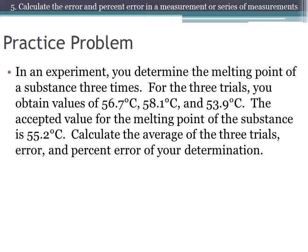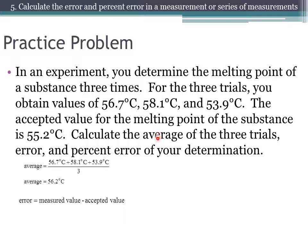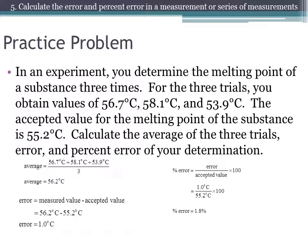Here is a practice problem. Try to do the problem first, then check your answers. The first thing we are going to do is calculate the average of our data — adding the data and dividing by the number of data points — giving us an average of 56.2 degrees Celsius. Now we find the error: 56.2 degrees Celsius minus the accepted value gives us an error of 1.0 degrees Celsius, positive because our average is larger than the accepted value. The percent error is 1.0 divided by 55.2 times 100, giving us 1.8%.